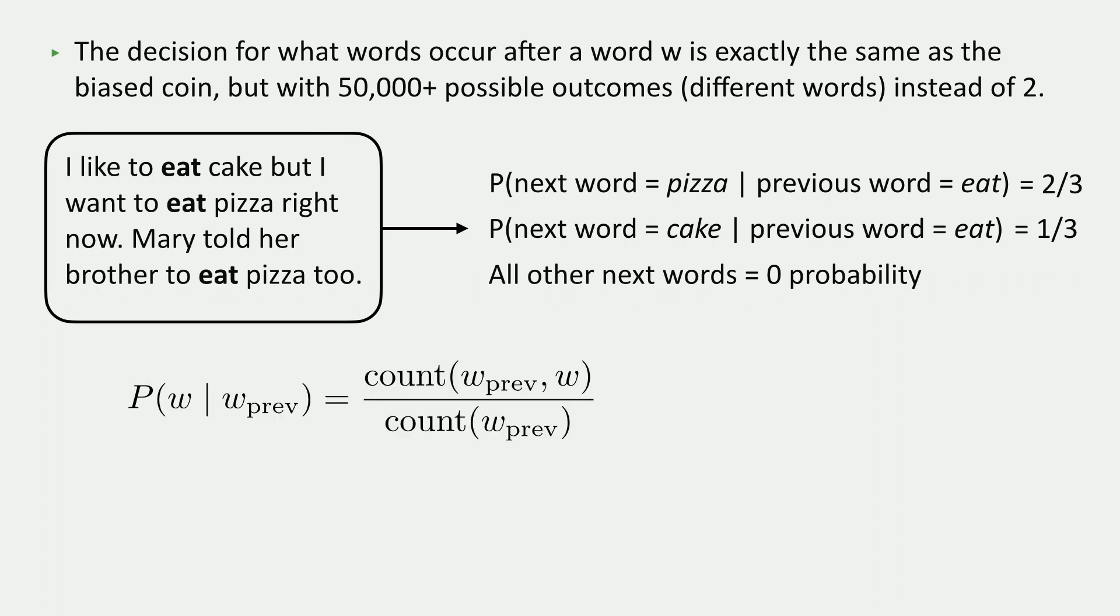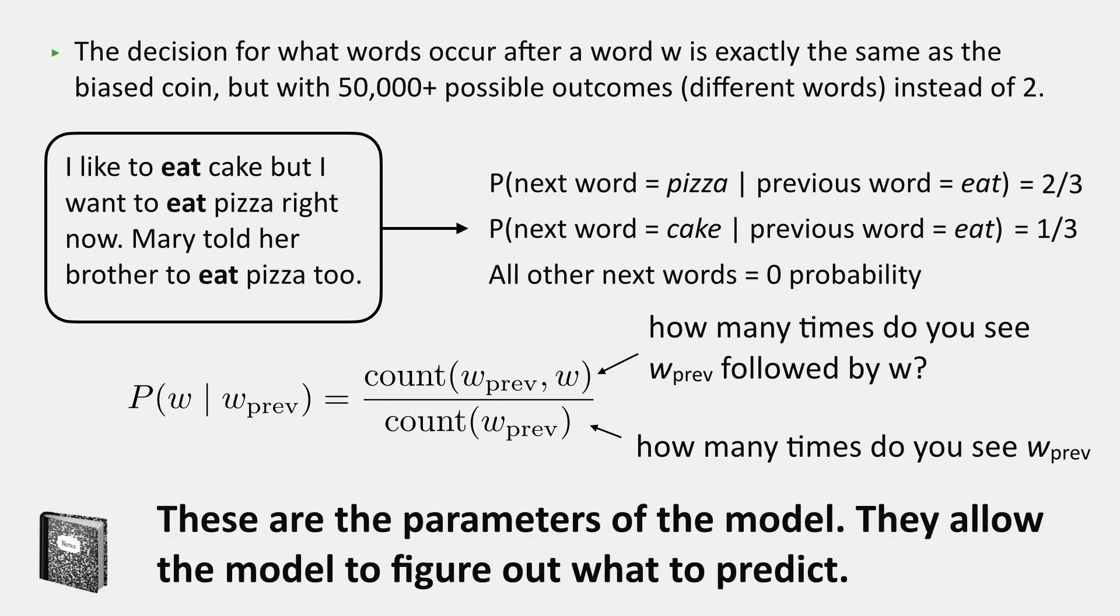So we can write this probability in a slightly more fancy abstract way by saying the probability of the word given the previous word is the count of that pair divided by the count of the previous word. That is, how many times did we see w prev followed by w versus how many times did we see w prev? And this is a set of numbers that we're going to call the parameters of the model. And we're going to come back to these later in the context of ChatGPT, but these are what allow the model to make its predictions.